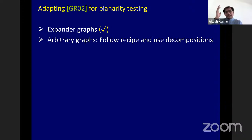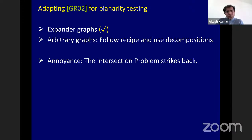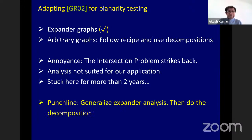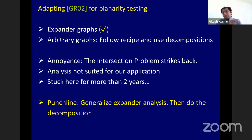In arbitrary graphs the recipe suggested by Goldreich and Ron does not work as well, and we were stuck here for about two years. What we finally realized is that you can discover an even more general and more useful recipe than the one formulated by Goldreich and Ron. The key is to generalize their expander analysis and then do a general decomposition.